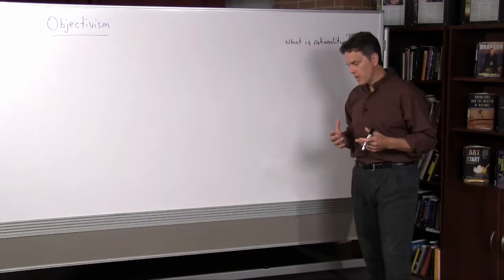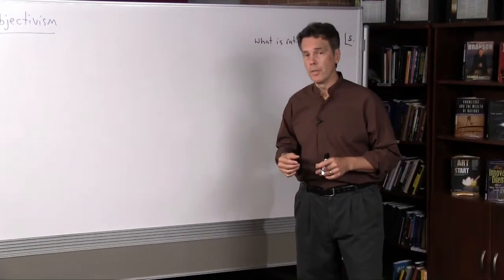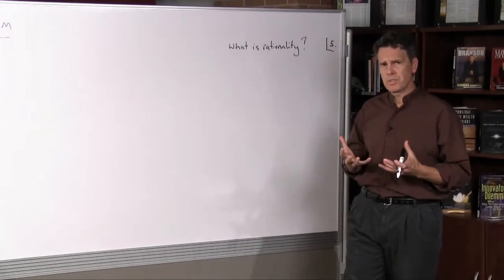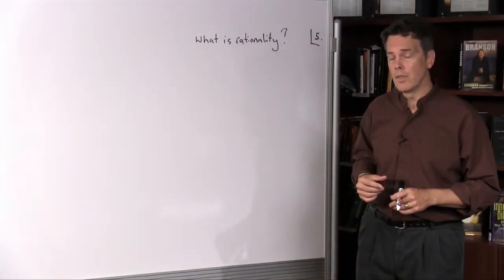Now, broadly speaking, Rand is a realist in the tradition of Aristotle, John Locke, and others, and she is a naturalist also in the tradition of Aristotle, John Locke, and others.